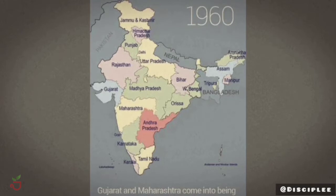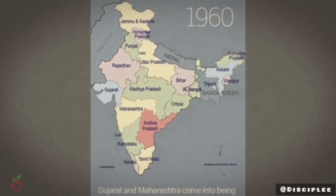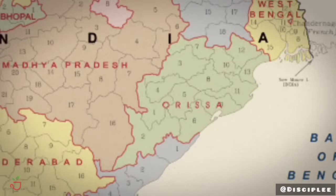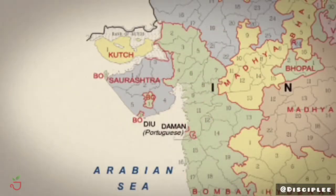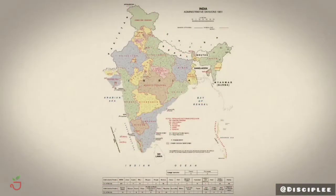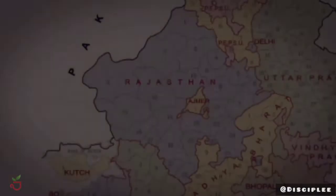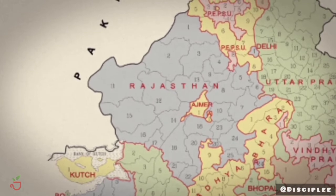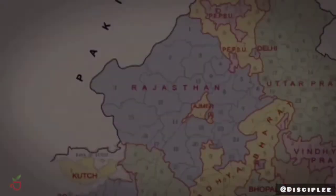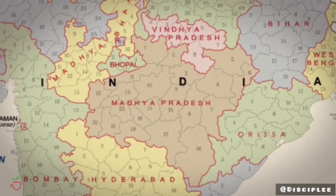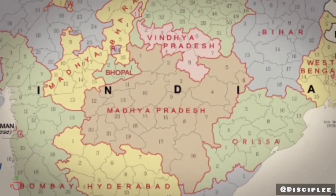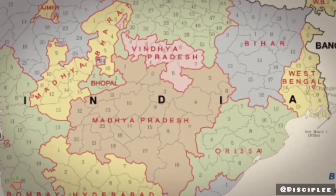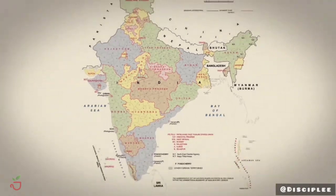Under paramountcy, external affairs, defense, and other matters of greater importance were handled by the British government. Princely states covered almost one third of the land area of the British Indian Empire, and one out of four Indians lived under princely rule. This was the scenario before independence.